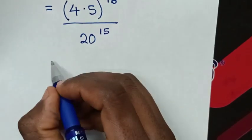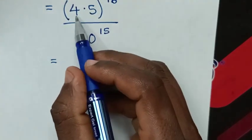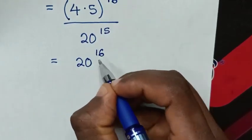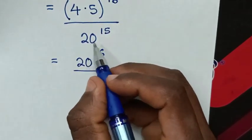Then in next step, it will be equal to 4 times 5 is 20 power of 16, then over 20 power of 15.